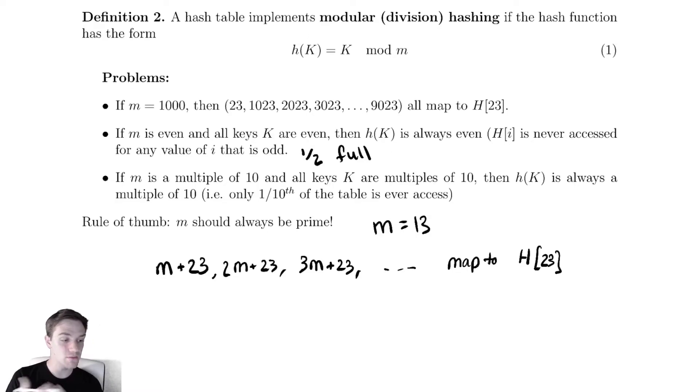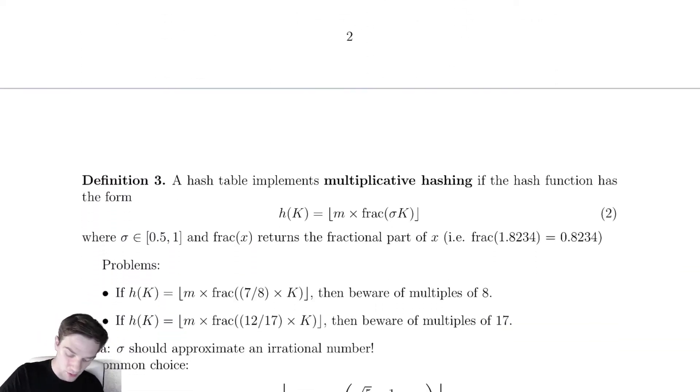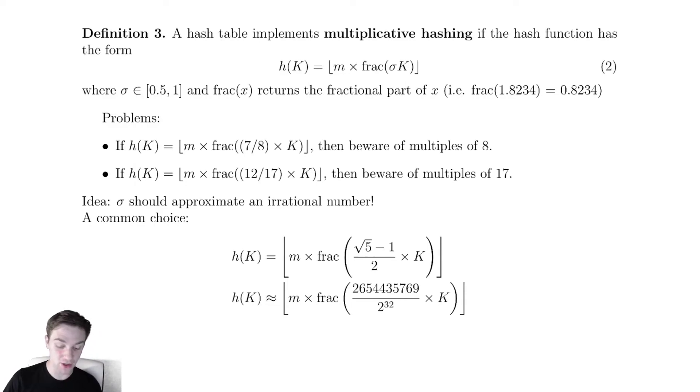There are some other more sophisticated ways we can implement hashing. Let's discuss them relatively briefly here. One of those more sophisticated ways is what's called multiplicative hashing. This is not using a modulus. It's using a rounding down method. And if you look, we're taking the value m, the size of the hash table, and multiplying it by the fractional part of sigma times k. I have this written out here as an example. We have the frack of this horrible decimal is just the fractional part, the part after the period.